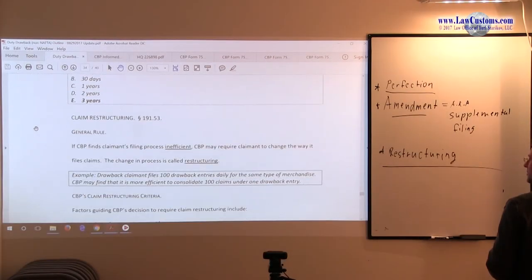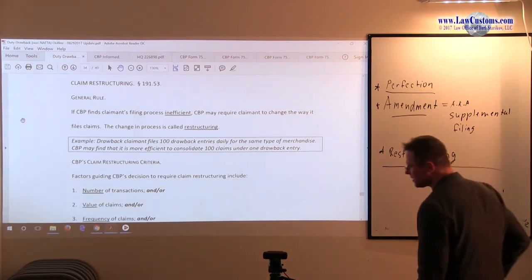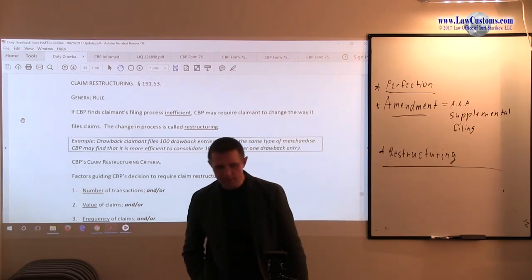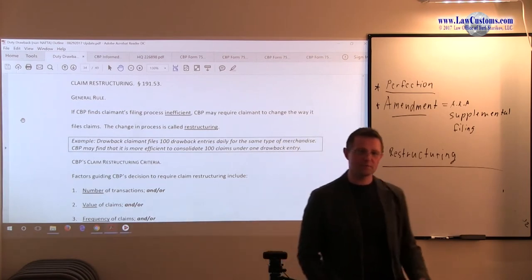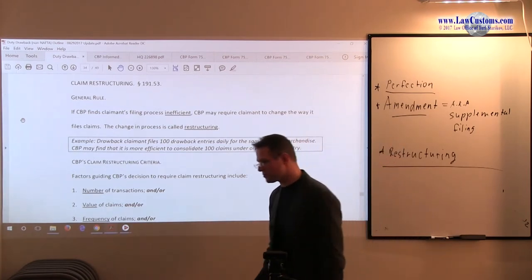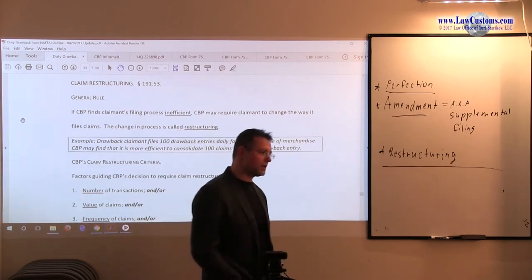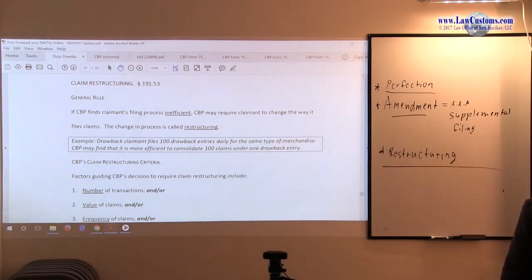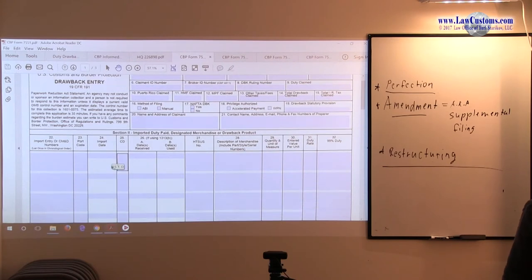Under section 191.53, restructuring really deals with administrative efficiency. You may file your claim in a cumbersome way, at least from the customs point of view, and customs becomes annoyed. So they say, okay, you need to restructure the way you make your claims.